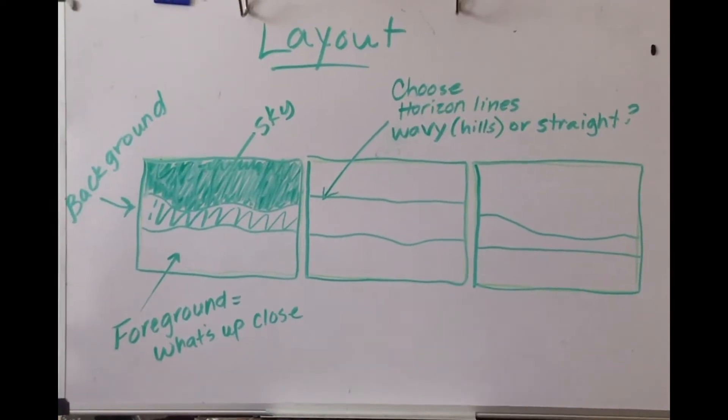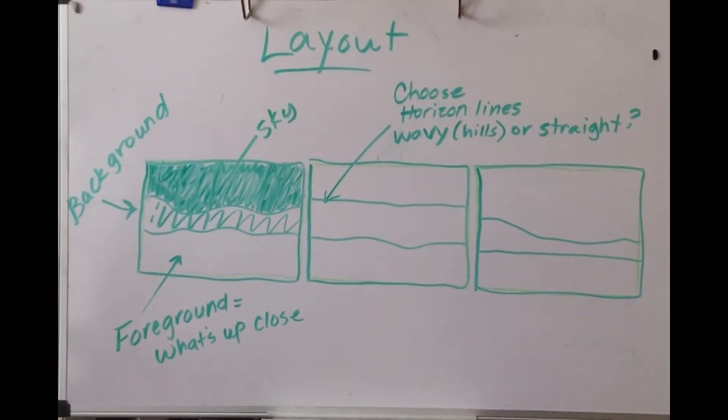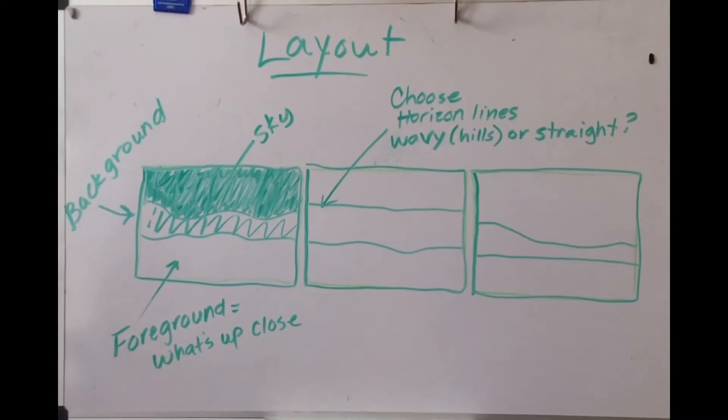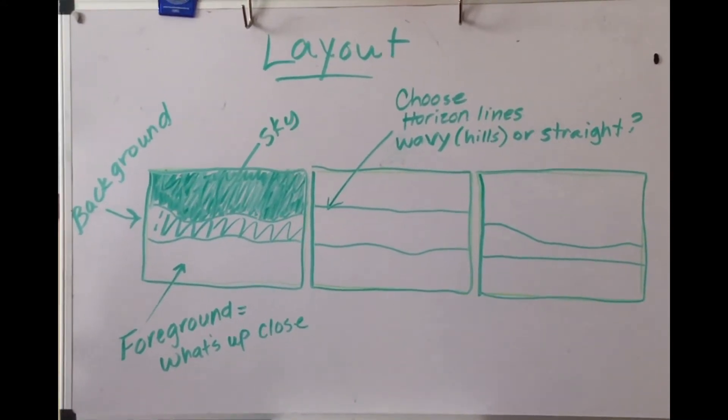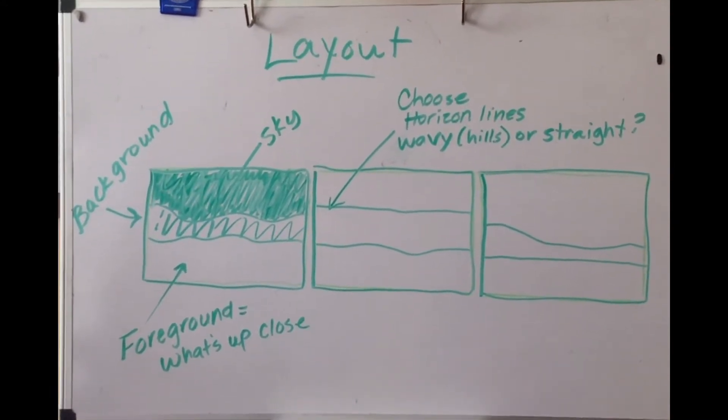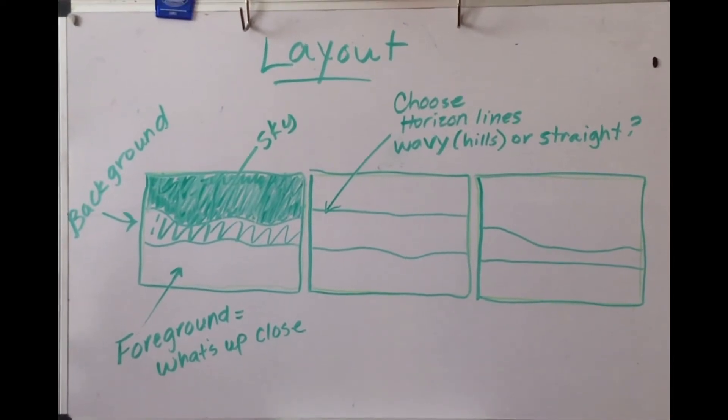So the first step is to figure out the layout of your painting. What proportion of your painting is going to be sky or background or foreground? Foreground is what's up close.